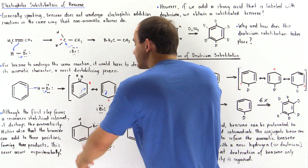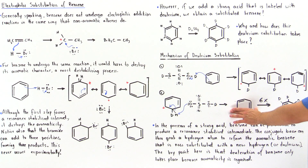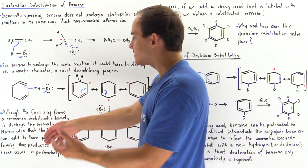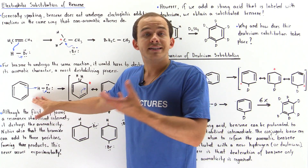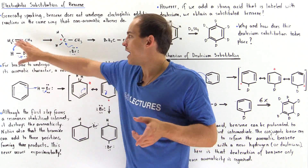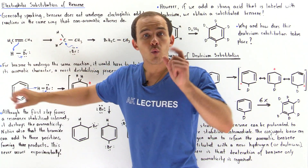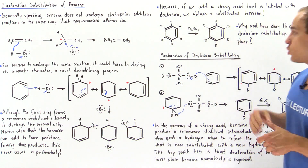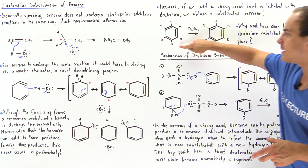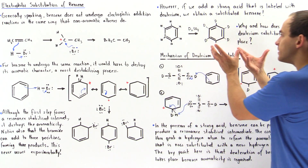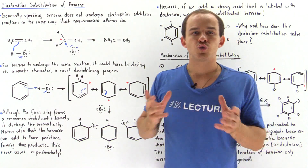In the addition case, aromaticity is lost in the product. In the substitution case, aromaticity is regained. Whenever benzene is placed in the presence of a strong acid, electrophilic addition reactions do not take place the way they do for simple non-aromatic alkenes. However, substitution reactions do take place, and we can actually substitute all the H atoms with deuterium, as long as the aromaticity of the product is regained.